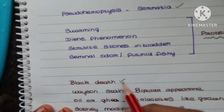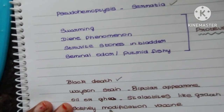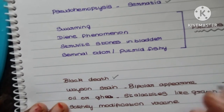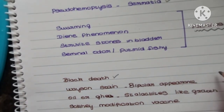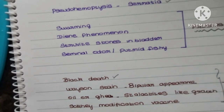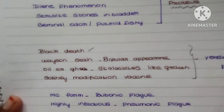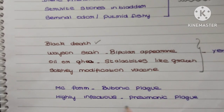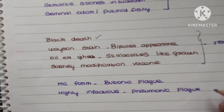Next: black death, Wayson's stain showing bipolar appearance, stalactite-like growth in broth, and Schüffner's modification — the organism is Yersinia pestis, which causes plague. The most common form of plague is bubonic plague, and the most infectious form is also bubonic plague. I'll be uploading Part 3 in the upcoming series — thank you.